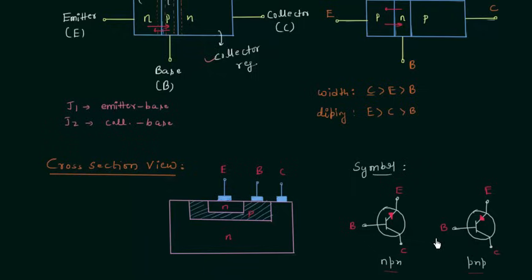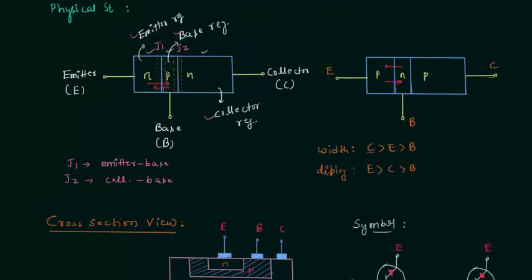We will use these symbols a lot in this course, so it's a good time to understand the meaning of the arrow in the transistor symbol. Before moving to the meaning of the name, note that we have two junctions and three regions, so it is like two PN junctions connected back to back. The transistor may be regarded as a combination of two diodes connected back to back.